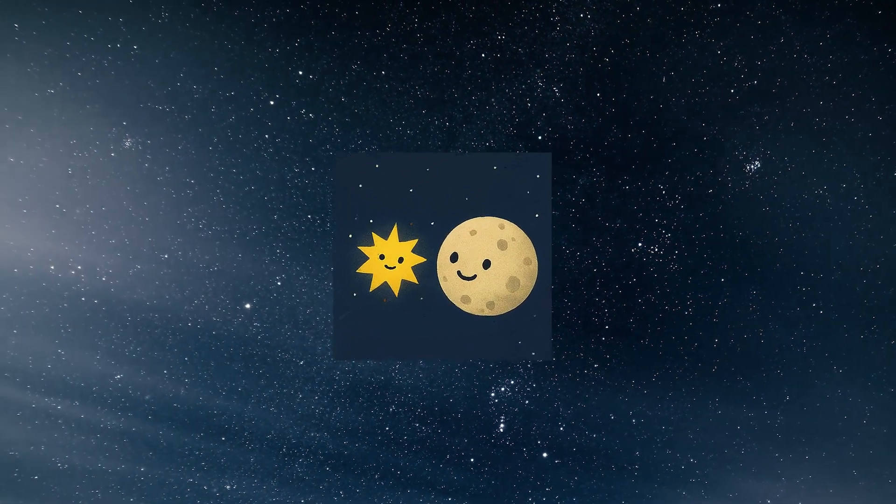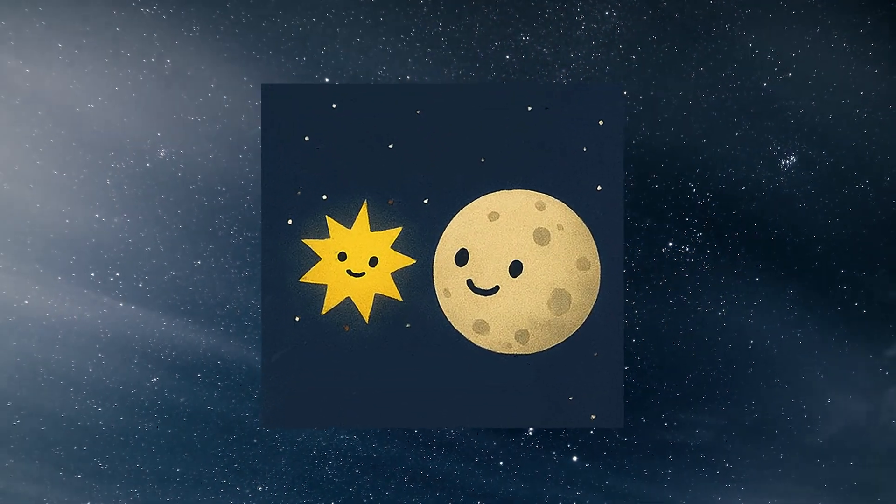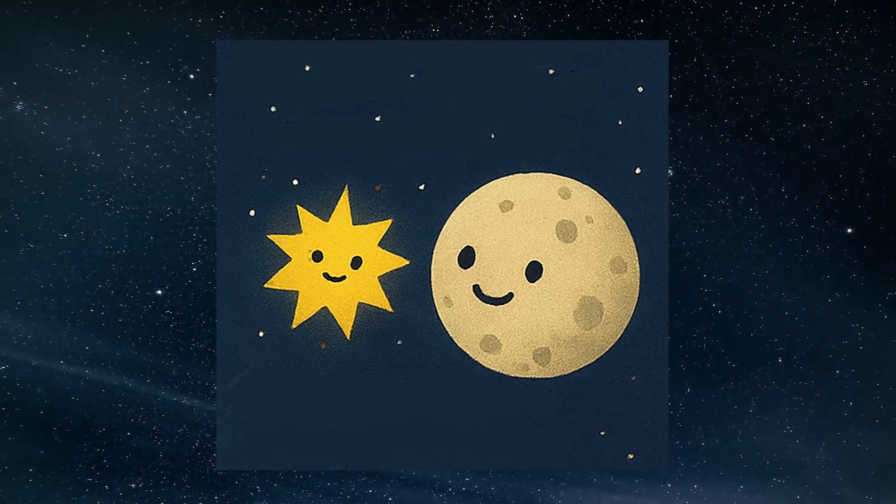The moon was made. A giant rock hit Earth, and the pieces flew off. They came together to make the moon.